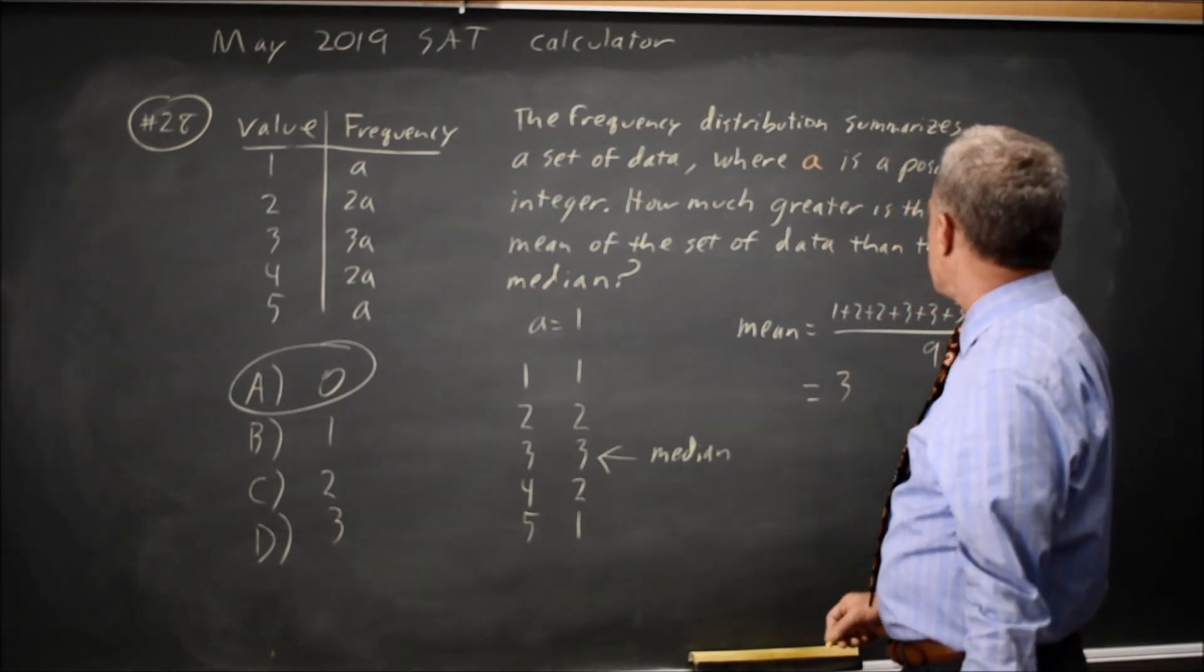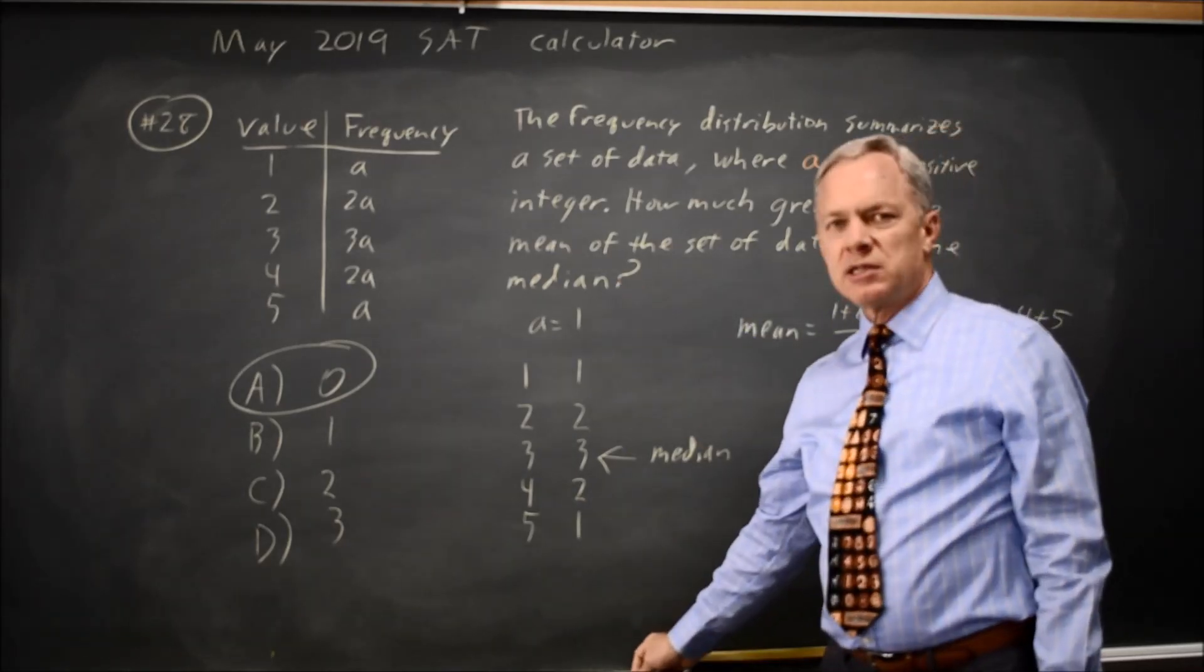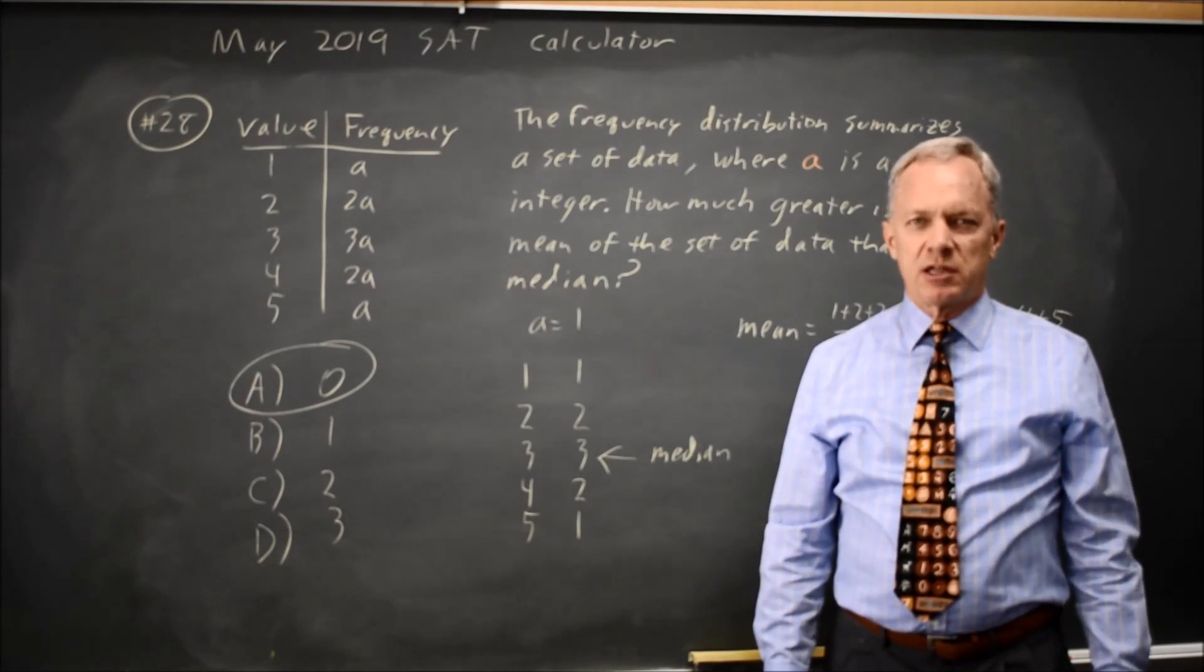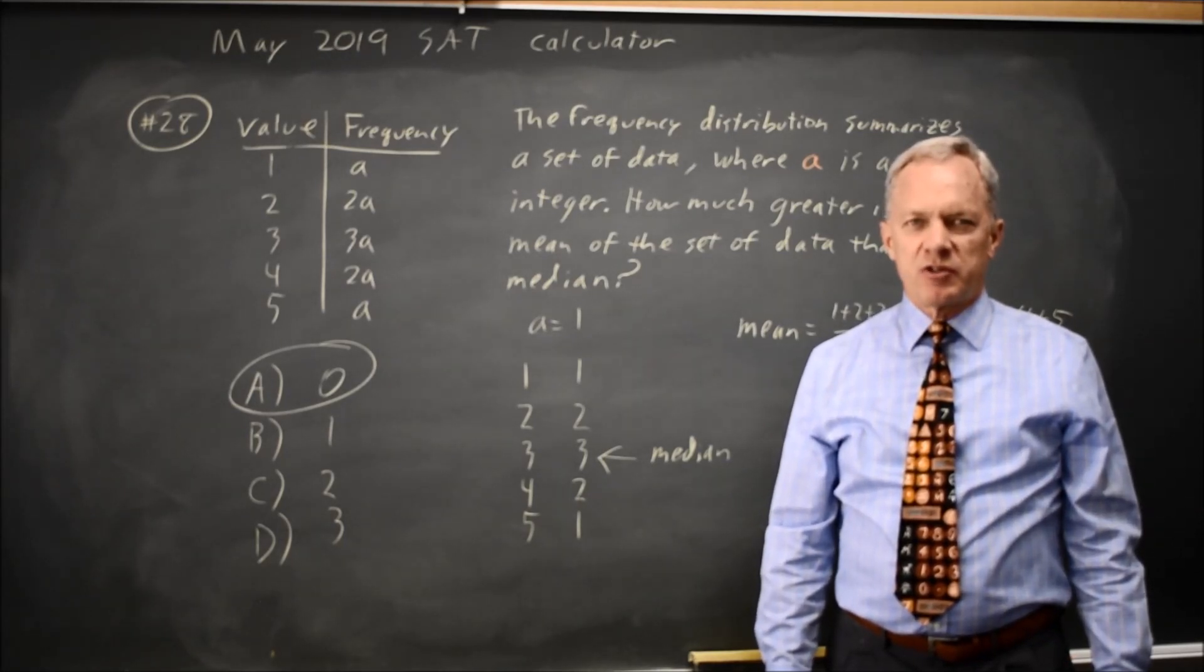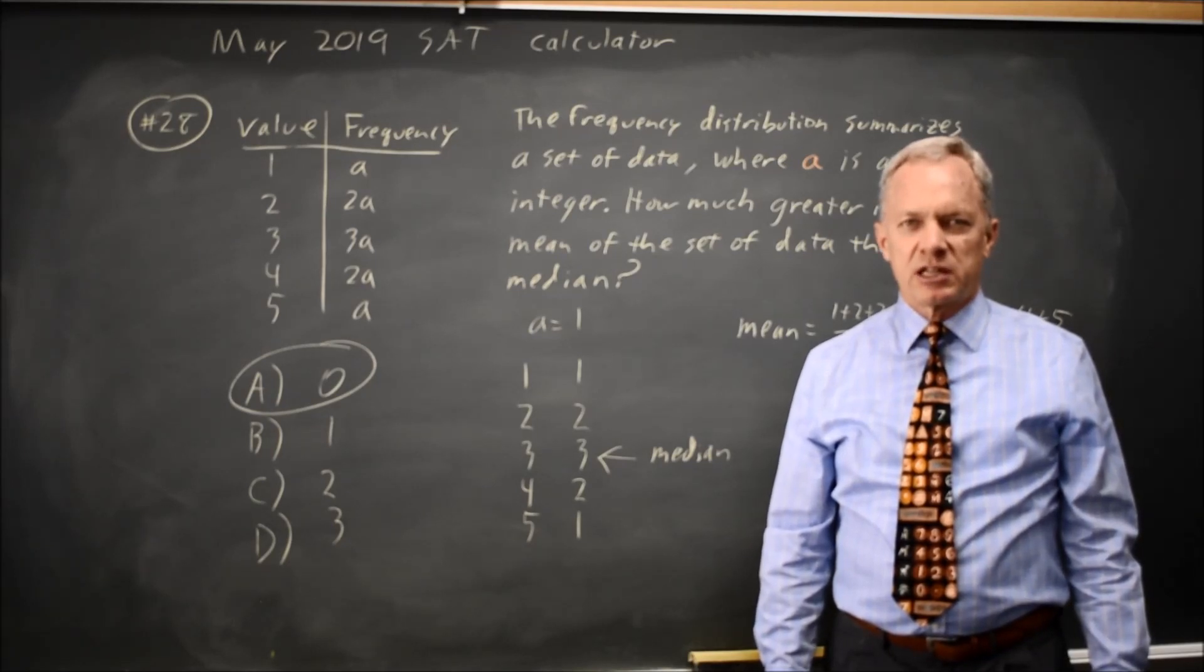And the mean and median are equal, so how much greater is the mean of the set of data than the median? 0. Symmetric data sets, the mean and median are equal, or you can choose a value for A and directly calculate the mean and find the median and find that, again, they are equal.